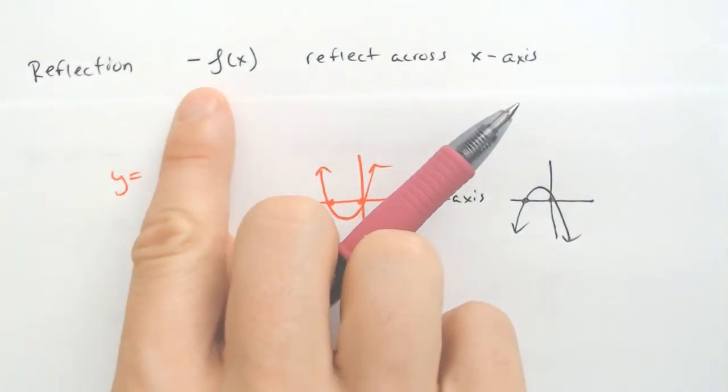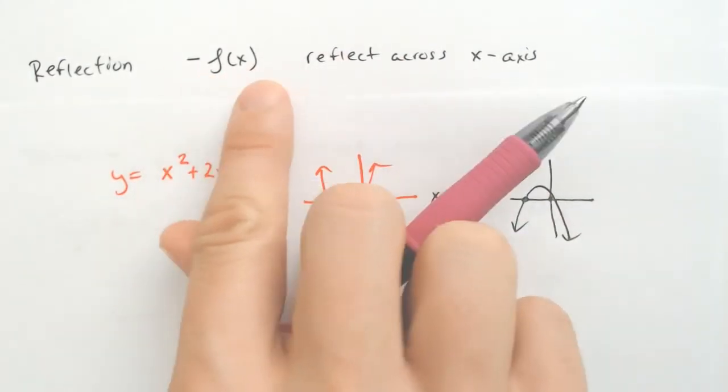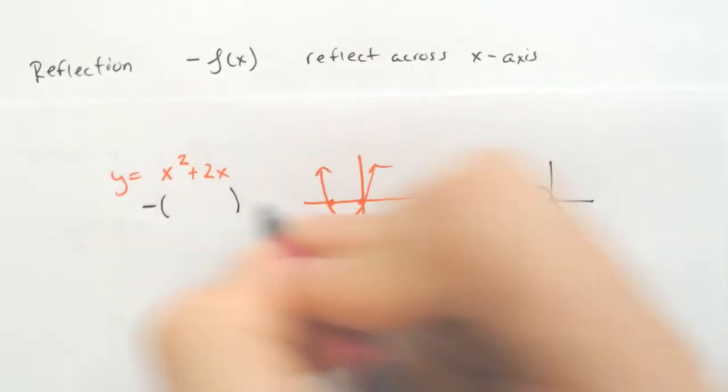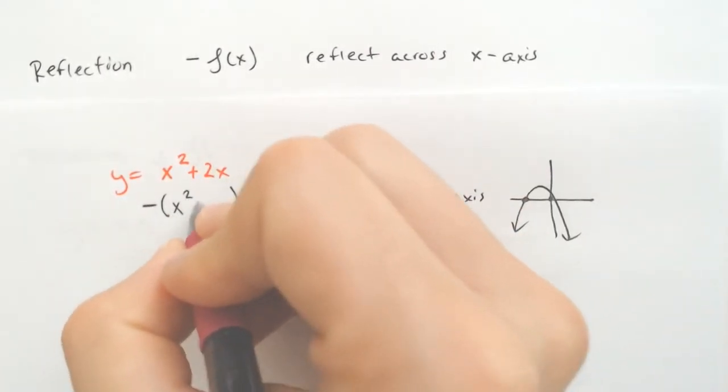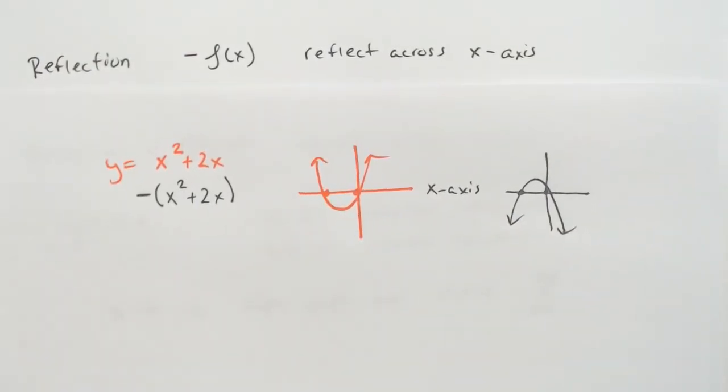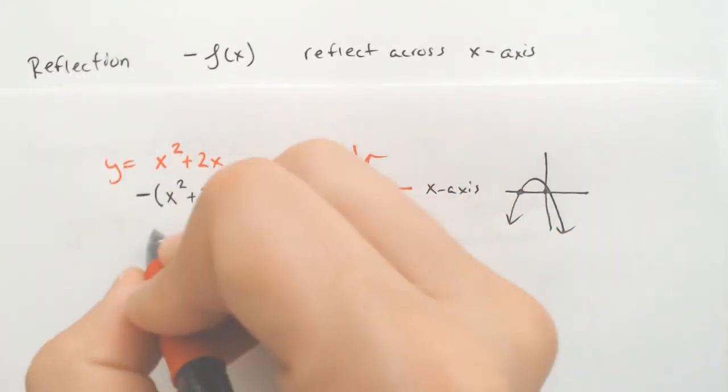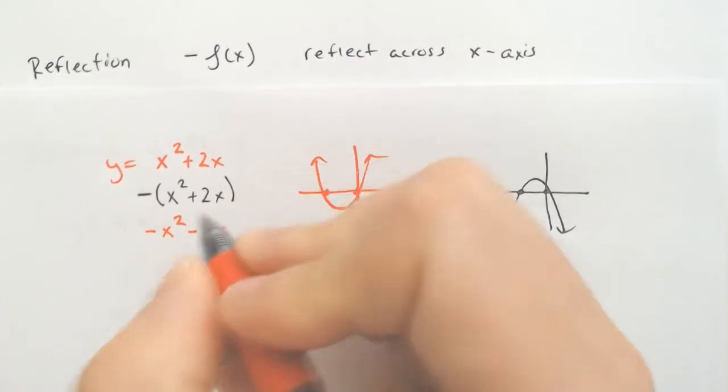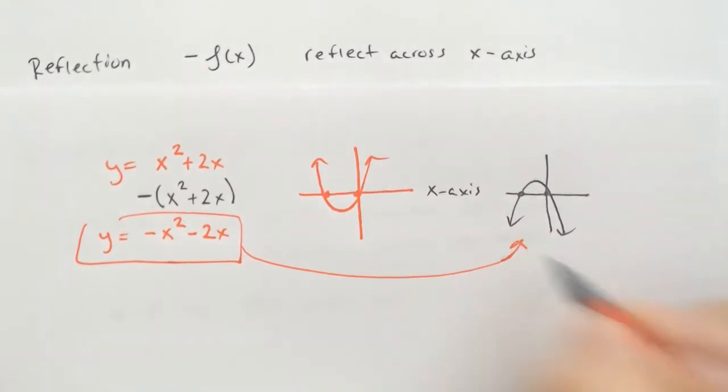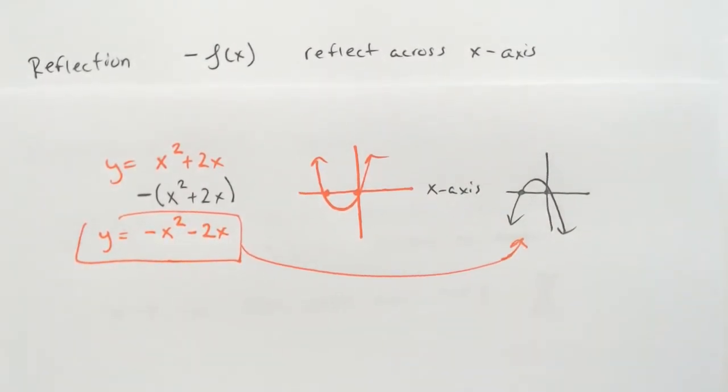We want it to flip completely over the x-axis. So the rule is reflection over the x-axis is negative f of x. So you put a negative over the entire function. That's where people mess up. They don't put it over the entire function and then distribute. So the reflect across the x-axis would be negative x squared minus 2x. And that, ladies and gentlemen, is what I have graphed right there, reflected across the x-axis.